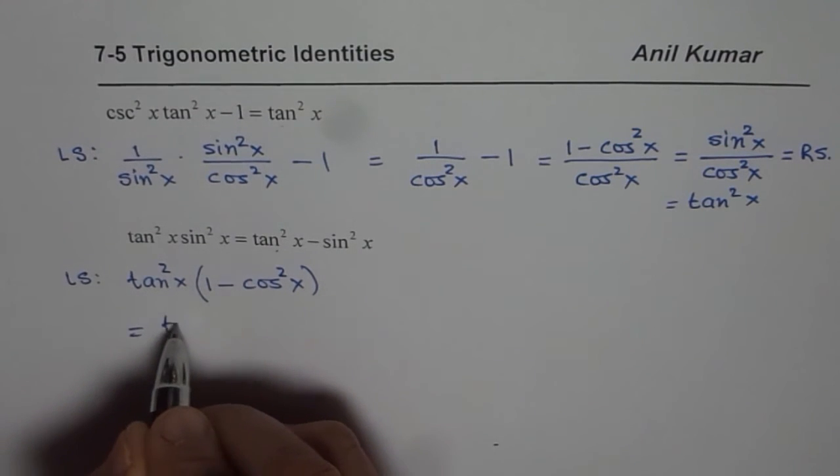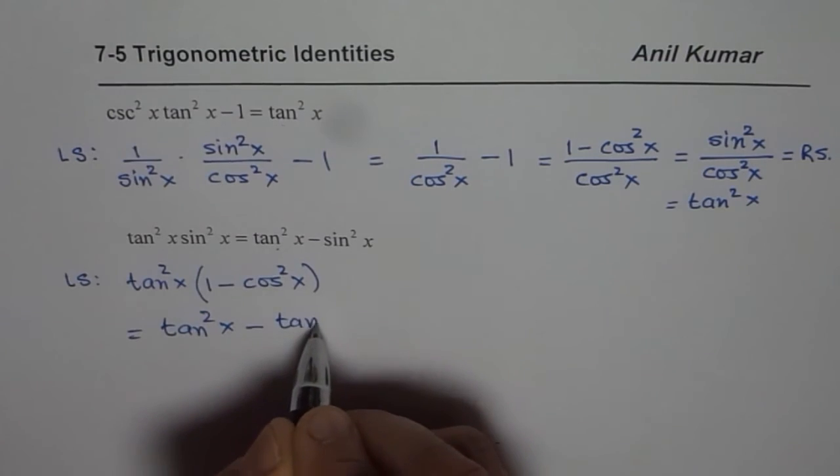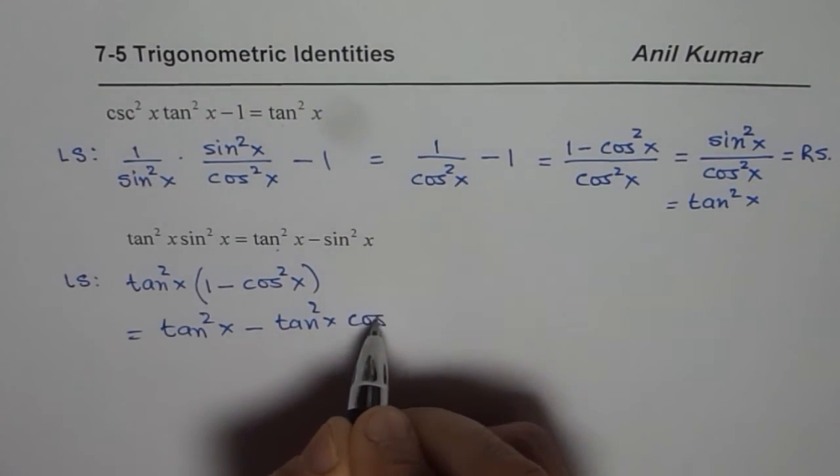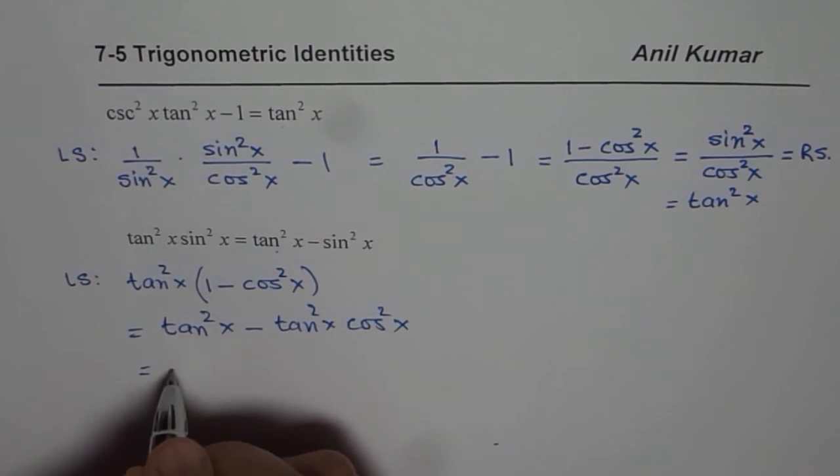So if you open this bracket you get tan square x minus tan square x cos square x. Now you can write tan square x as a ratio of sin and cosine. So what do you get?